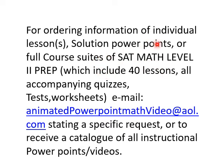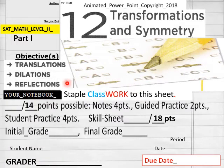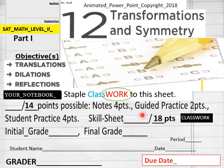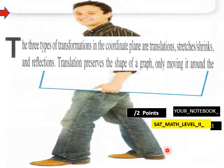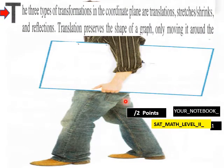Hello everybody, we're getting ready to do Chapter 12: Transformations and Symmetry for SAT Math Level 2 preparation. Section 12 in your notebook will have 14 points, and you will have 18 points on your class worksheet. Go ahead and have those out. Part one covers transformation symmetry: translations, dilations, and reflections.